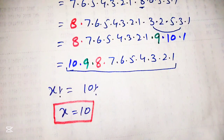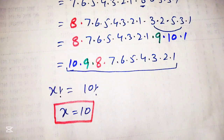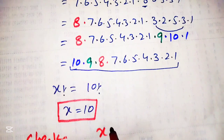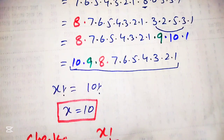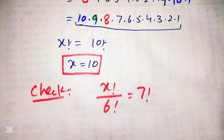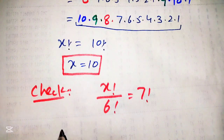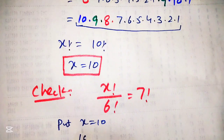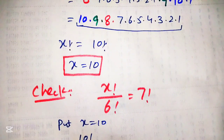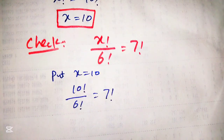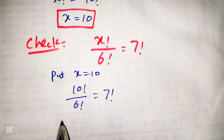Now we will verify this answer. To verify, we will rewrite the given equation: x factorial over 6 factorial is equal to 7 factorial. We put x equal to 10, so 10 factorial over 6 factorial is equal to 7 factorial.